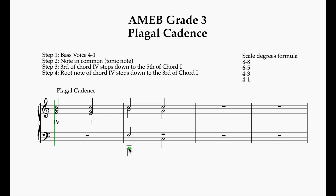I could put the bass all the way down and have the tenor there, but then there's more than an octave gap between the tenor and the alto, so that's no good. I'm going to move that up an octave — I'm still in the tenor range on that F, so that's fine. Doubling the root note of chord 4 in the tenor, that just needs to step down, and it's going to step down to the third of chord 1. And there it is — 8, 8, 6, 5 and 4, 3, 4, 1. Takes no time at all.